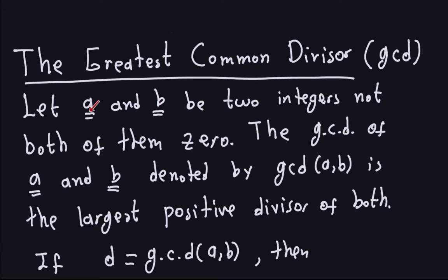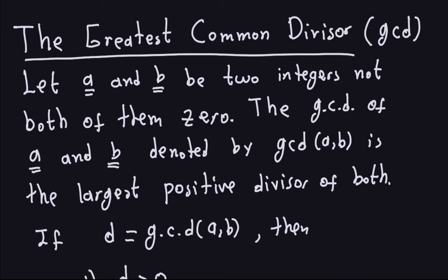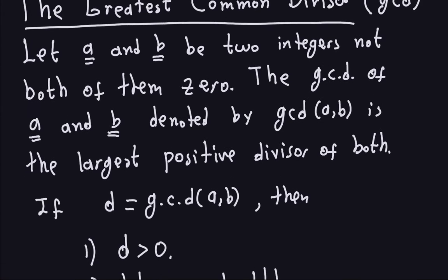We won't go into those technicalities, but just for your information, A and B are integers, not both of them 0. The GCD, as the name indicates, is going to be the greatest common divisor, and I'm going to indicate it with this notation: GCD parenthesis A, B. Whenever you see this notation, it means the greatest common divisor of two integers — it's like an operation that acts on two integers.